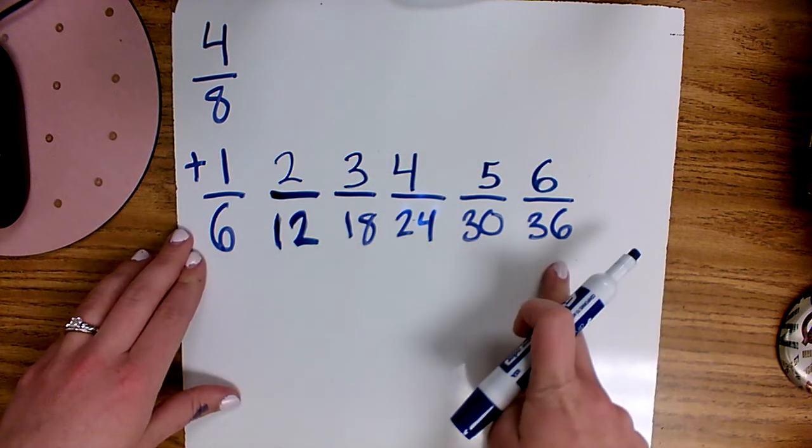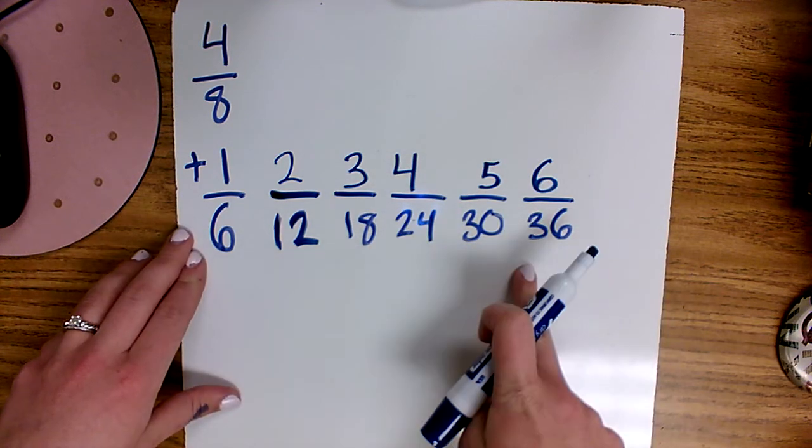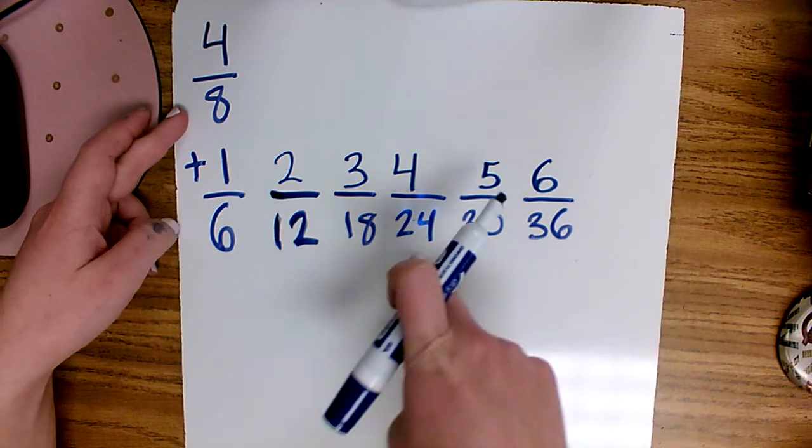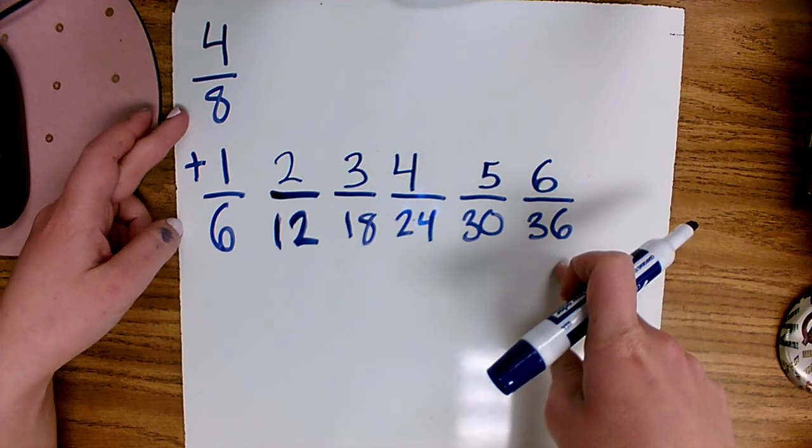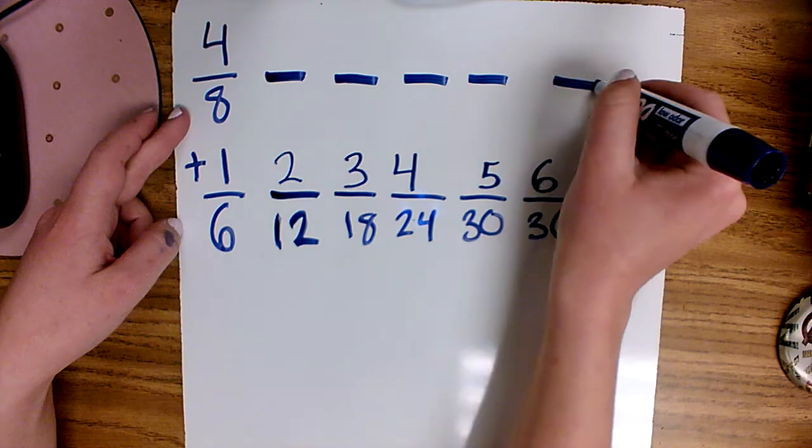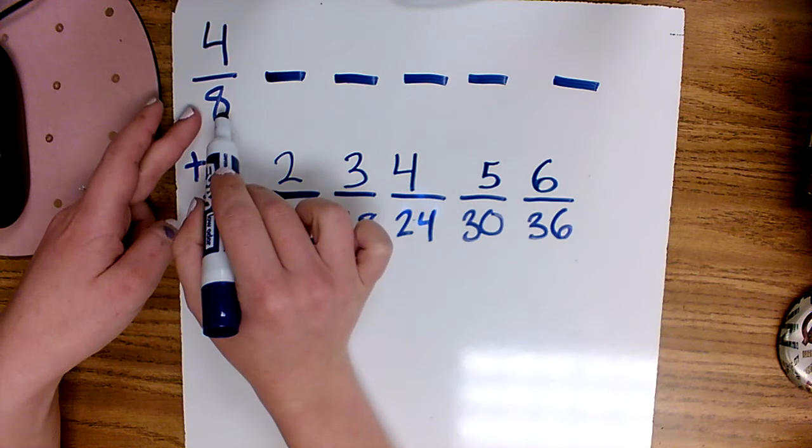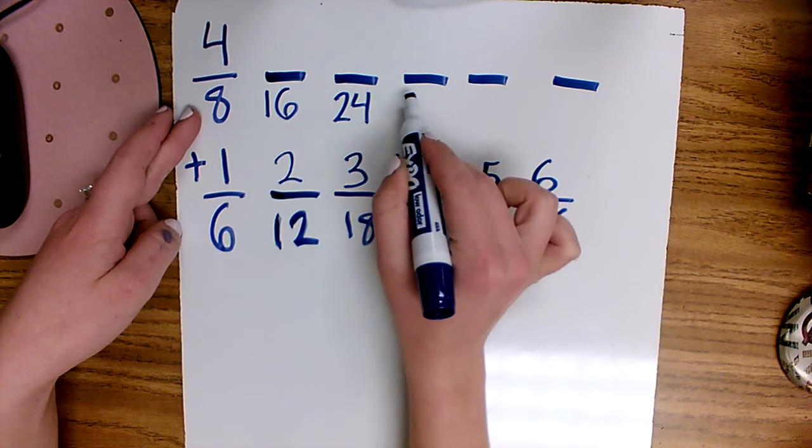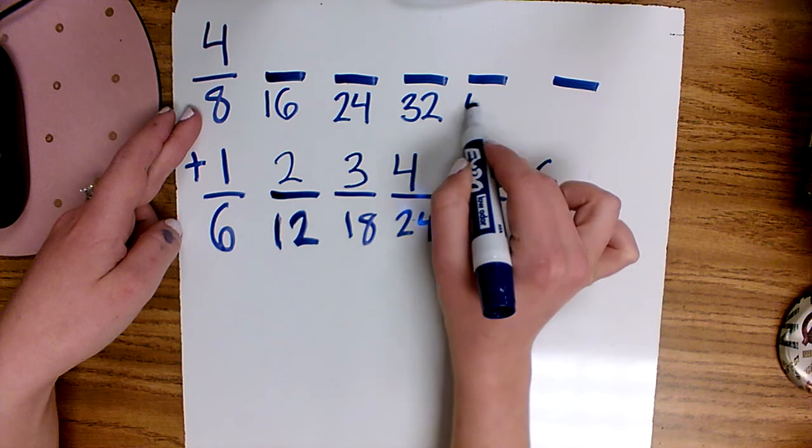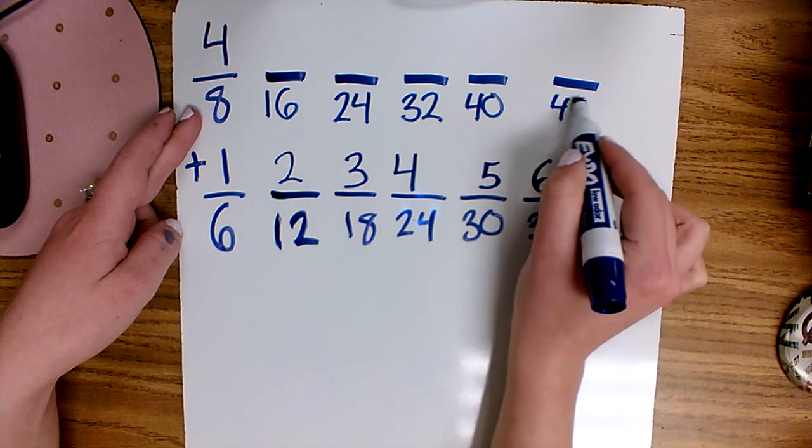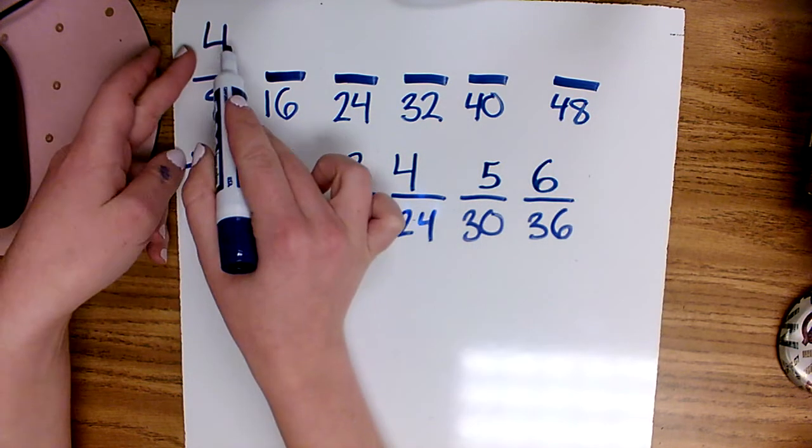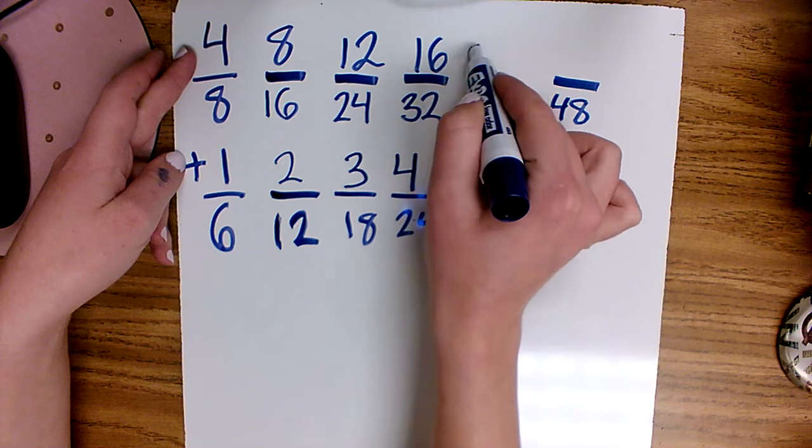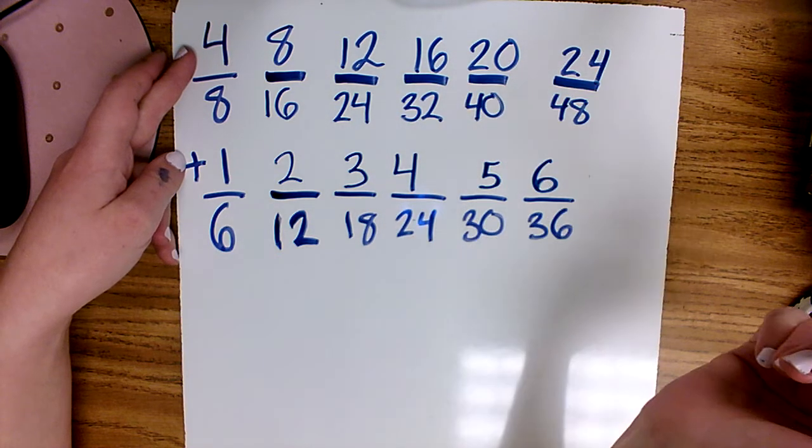I've made a list of five equivalent fractions with different denominators and I'm going to do the same at the top and try and find a denominator that is the same as one of my fractions on the bottom. So skip counting by eights: 8, 16, 24, 32, 40, 48. And skip counting by fours: 4, 8, 12, 16, 20, and 24.